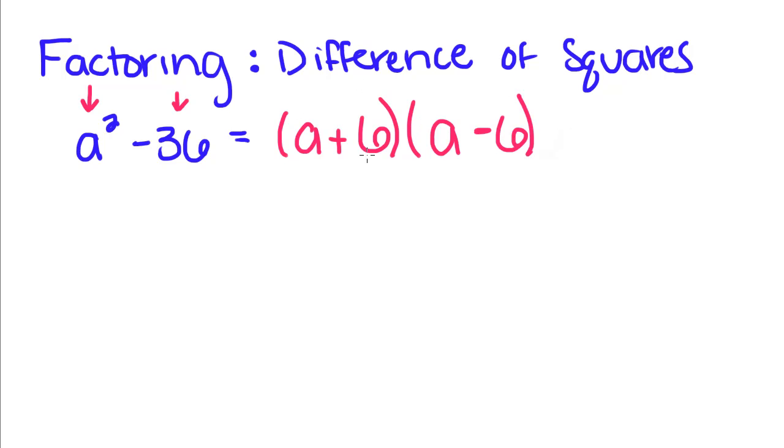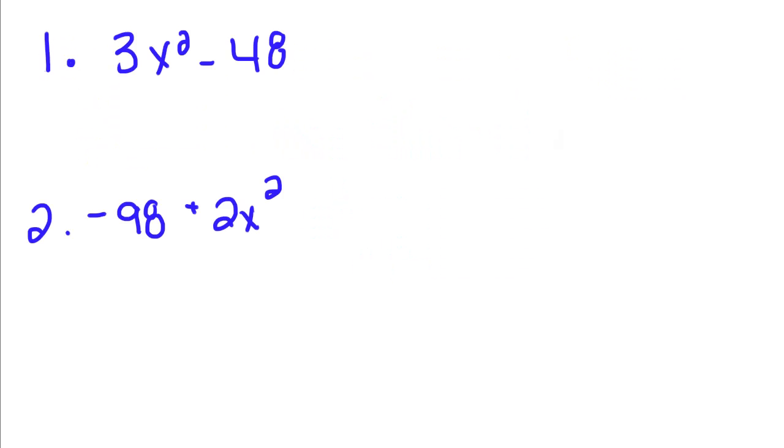Because if we were to foil this back out, we'd get a squared minus 6a plus 6a minus 36. And the negative 6a and the positive 6a cancels and we're just left with a squared minus 36. Now let's do a few examples.